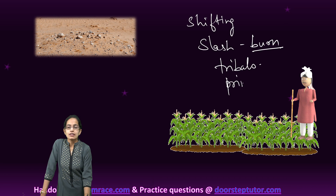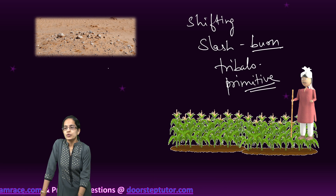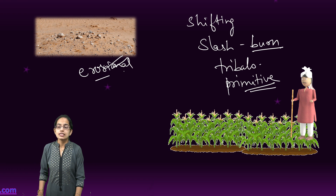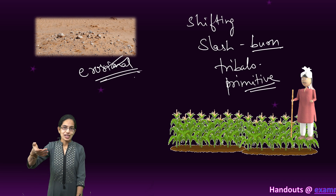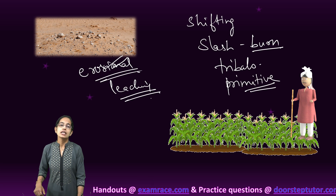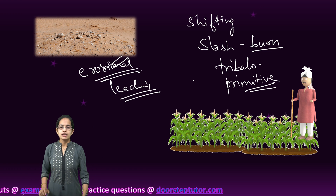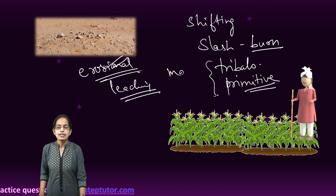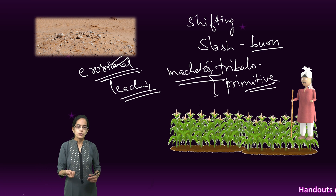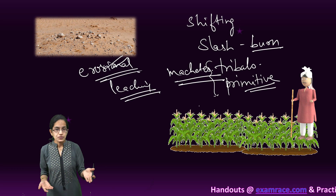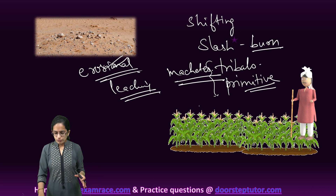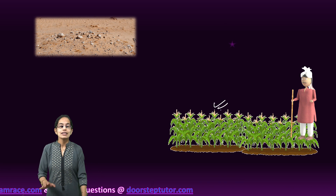It is commonly seen among tribals and primitive people. When you leave the land barren, erosional activities can occur, and these could further erode away essential nutrients. There can also be extensive bleaching of the soil, leading to further infertility. Since it is used by primitive people, handheld tools like machetes are the only tools being used.